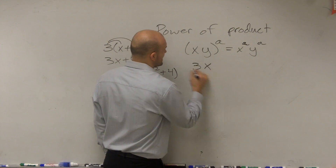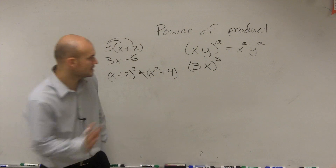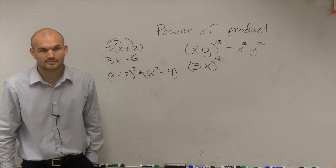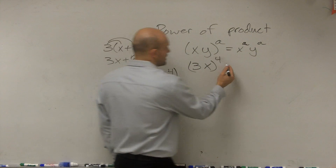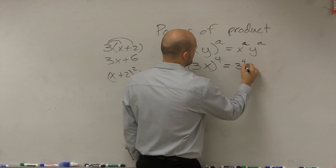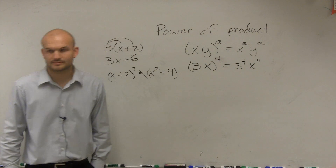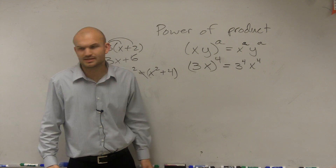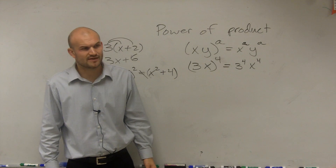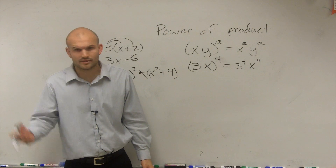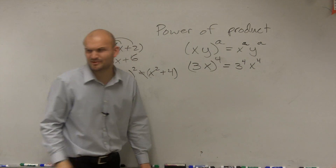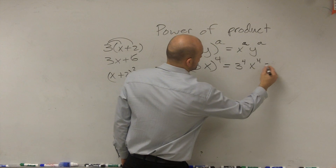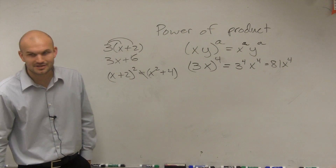What about (3x) to the fourth? By applying this rule, I'm going to have 3 to the fourth times x to the fourth. All you do is take your power and distribute it to both terms. So 3 to the fourth is 81, giving us 81x to the fourth.